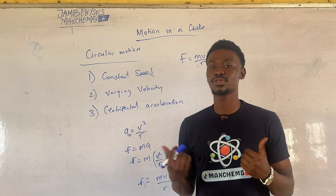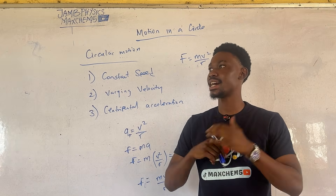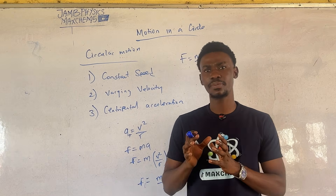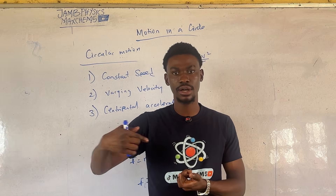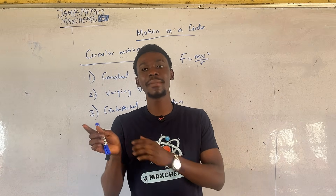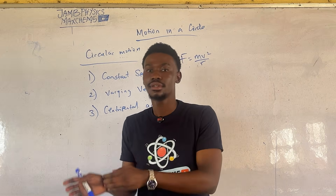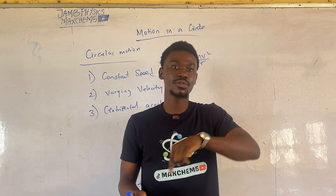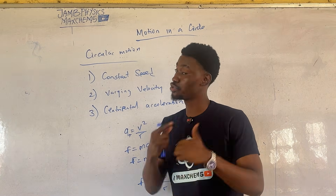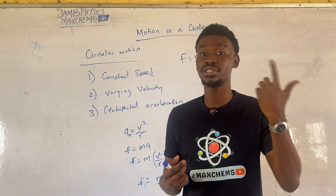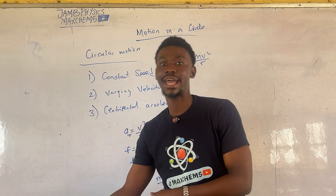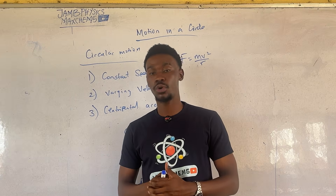Recalling Newton's third law of motion — to every action there is an equal and opposite reaction — if there is a centripetal force keeping an object along the circular path, there also has to be an opposing force to maintain the object on that same path. That opposing force is called the centrifugal force, opposing the action of the centripetal force.